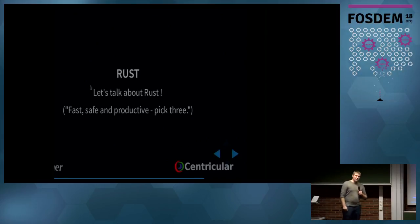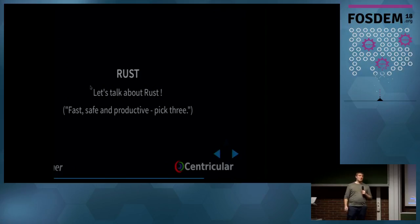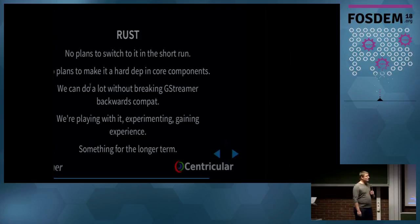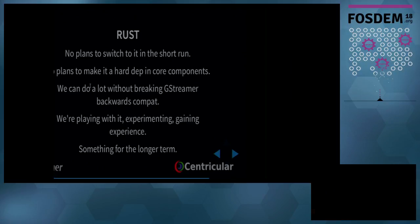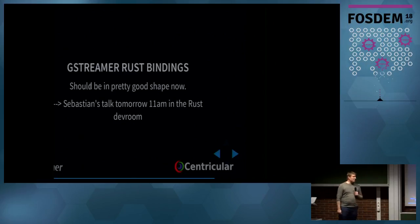Rust — Rust is awesome. It's a new programming language originally from Mozilla — basically the C++ we always wanted. It's a system programming language that is safe, productive, and more or less as fast as C and C++, with zero-cost abstractions. We're not going to port GStreamer to Rust anytime soon, but we're playing with it and it matches our memory ownership model well. The Rust bindings are in excellent shape, can be used in production, and Sebastian has a talk tomorrow at 11.